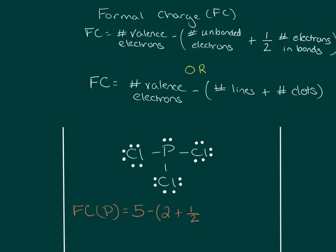When looking at formal charge on phosphorus, we ignore the identity of the atoms it is bonded to — we only care how many electrons are in these bonds. In this case there are two, four, six electrons in the bonds. So one-half times six. You can see that is equal to five minus five, which is zero.